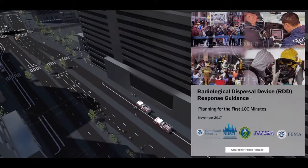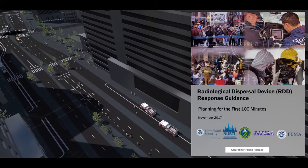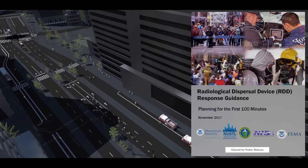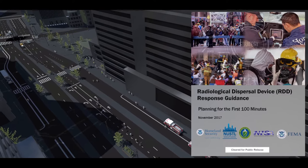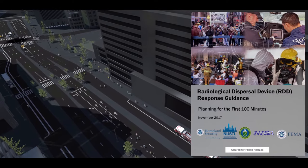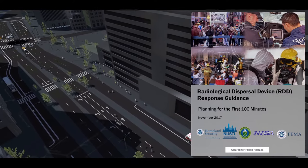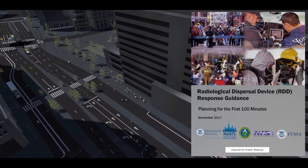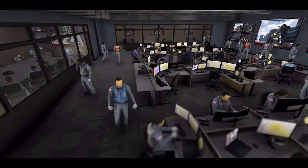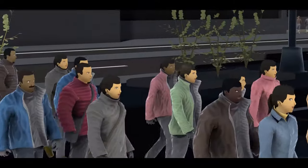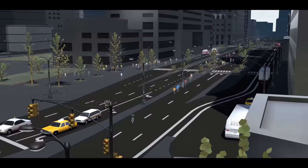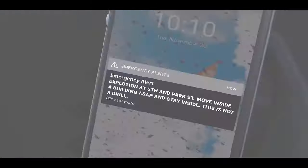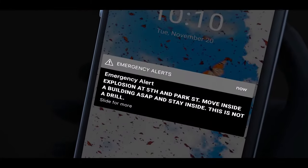This science-based response planning guidance for the response to a radiological dispersal device detonation is intended for first responders and local response agencies, and is based on realistic estimates of the possible consequences. This guidance document includes recommended actions for emergency management, responders, and the public. It also includes capability recommendations such as personal protective equipment, and templates for public messaging.